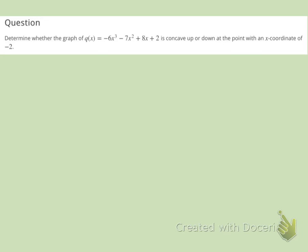We know that a graph is concave up if the second derivative at x equals negative 2 is positive, and the graph is concave down if the second derivative at x equals negative 2 is negative. So we need to find the second derivative.